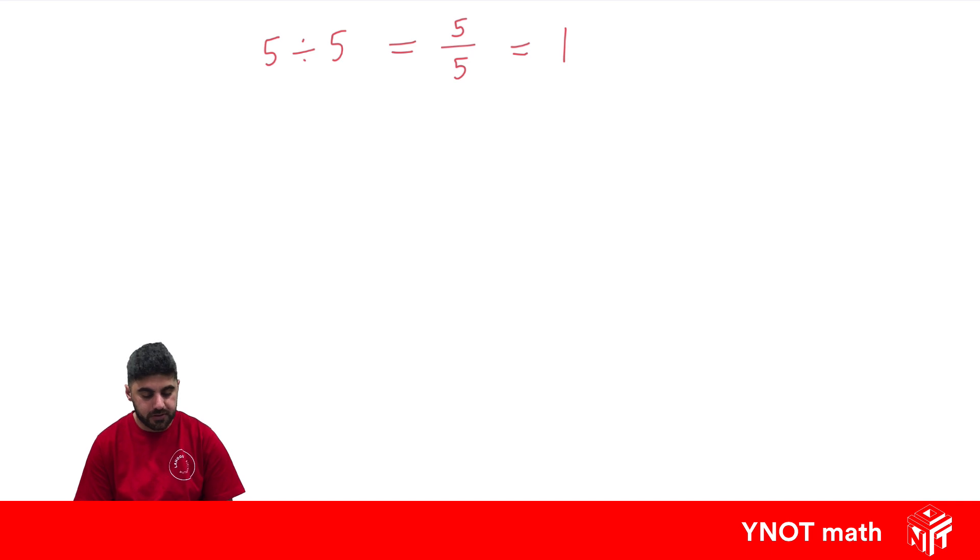And this is one of the most important concepts when dividing terms. So if we have the same thing dividing it by itself, it always equals 1.